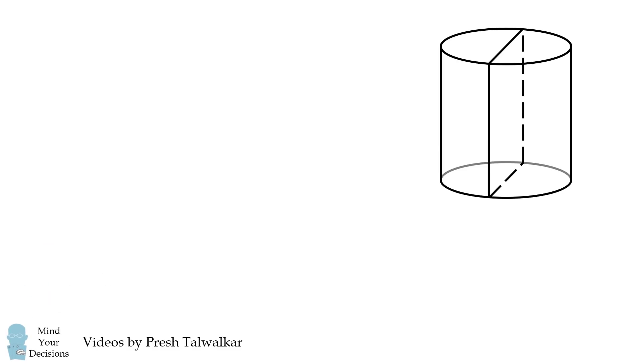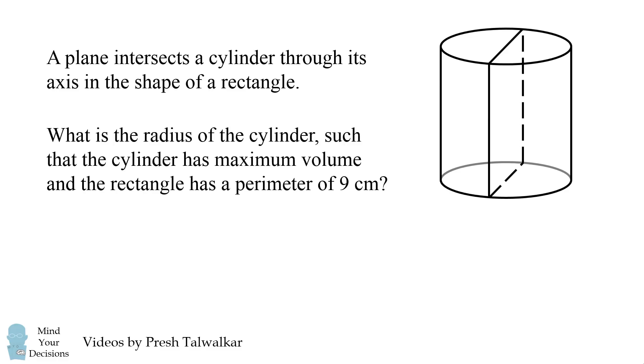A plane intersects a cylinder through its axis in the shape of a rectangle. What is the radius of the cylinder such that the cylinder has maximum volume and the rectangle has a perimeter of 9 cm?